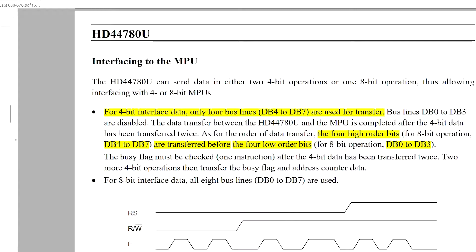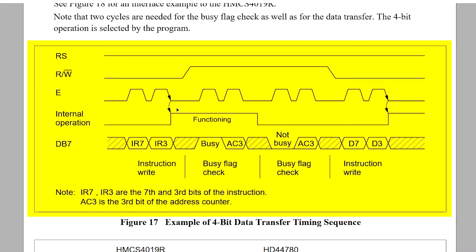Next, we should learn the data transfer process. From this timing sequence we can see that the data transfer takes place when the enable pin goes from high to low — technically, it's a negative edge triggered action. So what I learned is that I need to place the data bits on D4 to D7 pins, then make the enable pin high if it is low, then bring it from high to low. With this much information, I can now start writing the program.